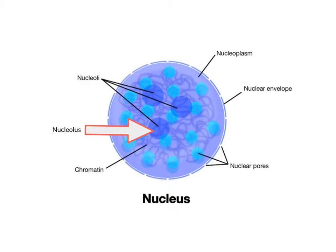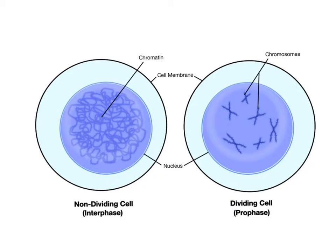Chromatin, as shown here, is the more diffuse, unorganized DNA that takes the form of tiny threads that fill up the nucleus. Chromatin is present in cells that are not dividing.